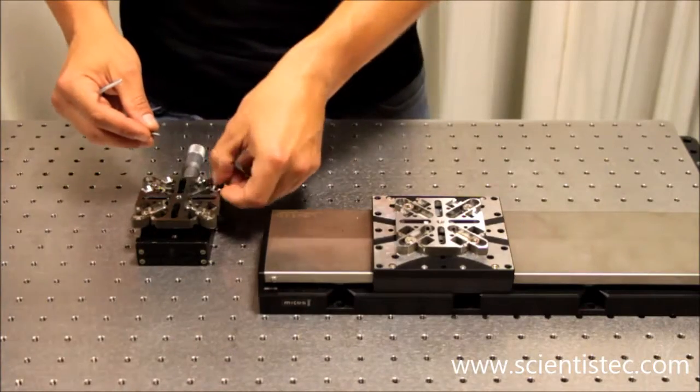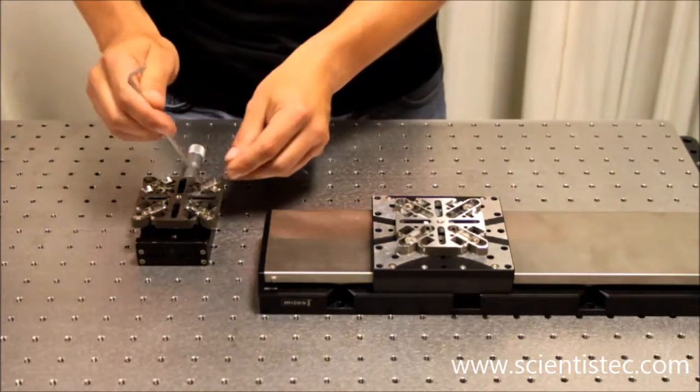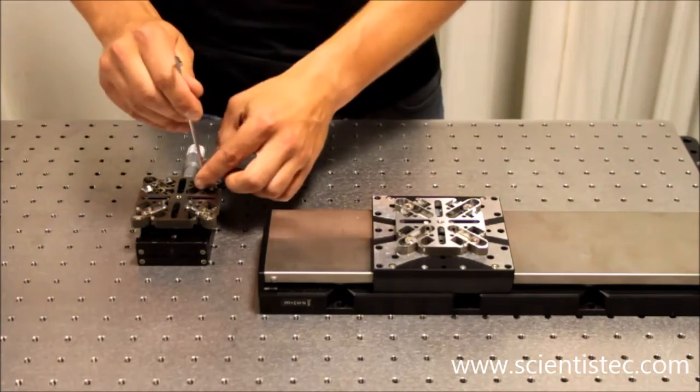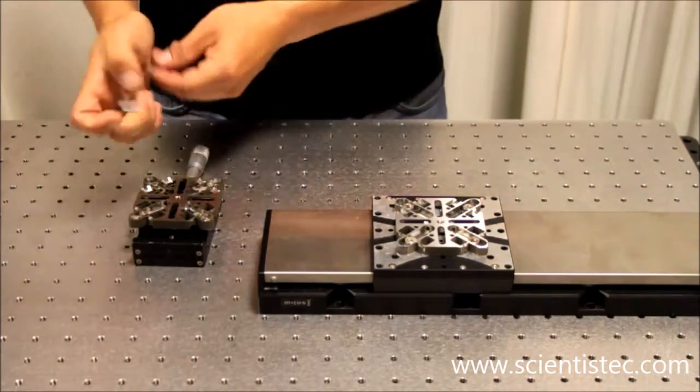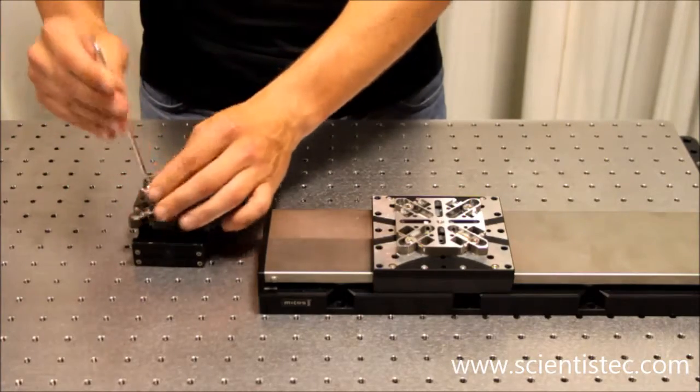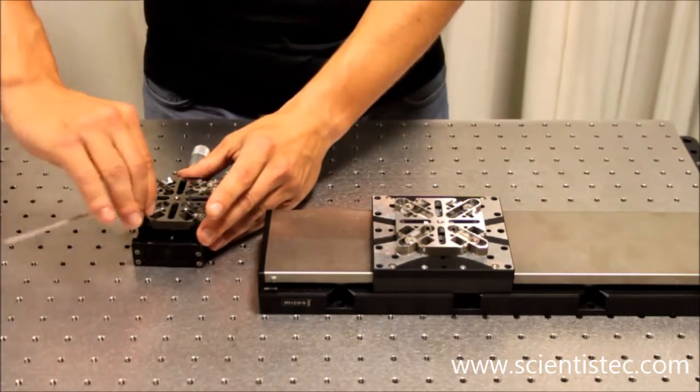As seen before, I tighten the screws slightly first until all screws are in position before I tighten the screws completely. Based on the position of the washers, the BeamLine adapter aligns itself optimally.